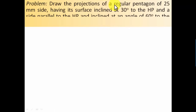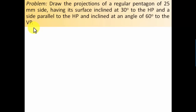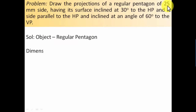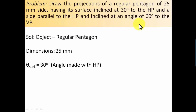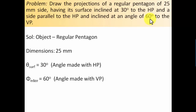The problem: draw the projections of a regular pentagon of 25 mm side, having its surface inclined at 30 degrees to the HP, and a side parallel to the HP and inclined at an angle of 60 degrees to the VP. Extracting data: the object is a regular pentagon with all sides 25 mm. Surface inclination — theta (θ surface) equals 30 degrees. Side inclination with respect to VP — phi (φ side/edge) equals 60 degrees.